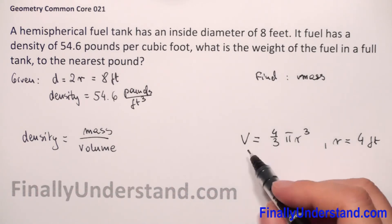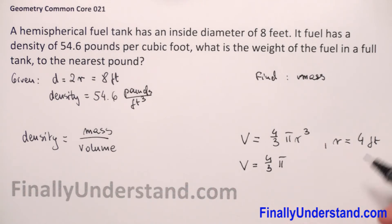Now we can substitute into this formula. Volume will be 4 over 3 pi times 4 to the 3rd power. So we have the volume and we have the density.